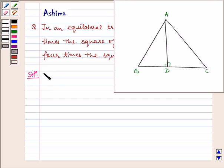Here in triangle ADB and triangle ADC, we have AB is equal to AC. The sides of an equilateral triangle are equal.